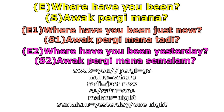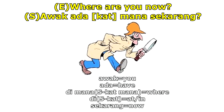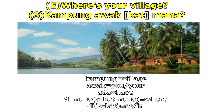If you do a direct translation from English to Malay, you might confuse "mana ada" with "ada mana." So "where is it" is "ada mana" or "ada kat mana?" For example, "where are you now?" is "awak ada mana sekarang?" or "awak ada kat mana sekarang?" And "where's your village?" is "kampung awak kat mana?" or "kat mana kampung awak?" or "kampung awak mana?" — all are acceptable.